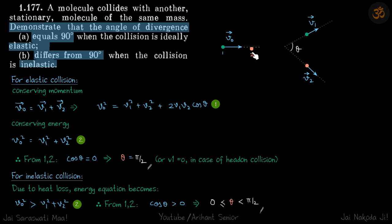When a ball collides with another stationary ball, we need to prove that the angle of divergence—the angle between the two balls—is equal to 90 degrees when the collision is elastic and differs from 90 degrees when the collision is inelastic.